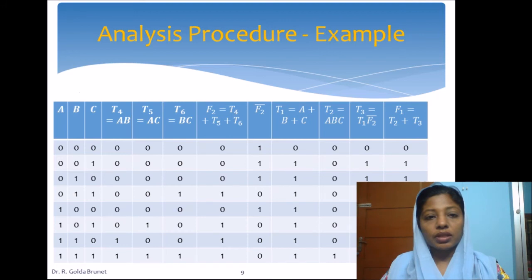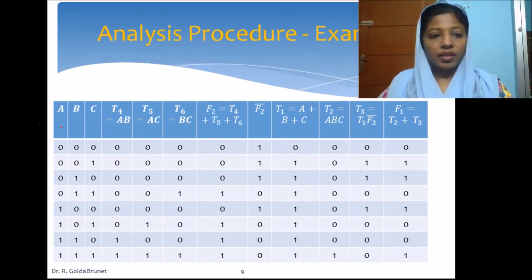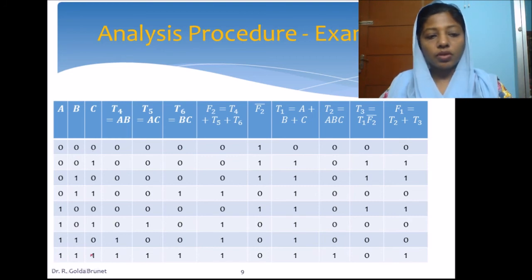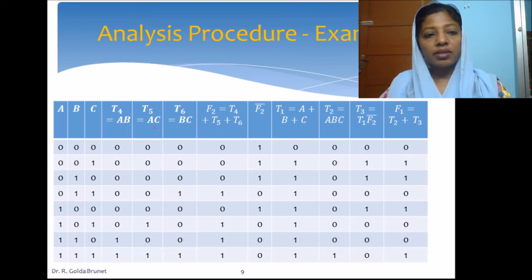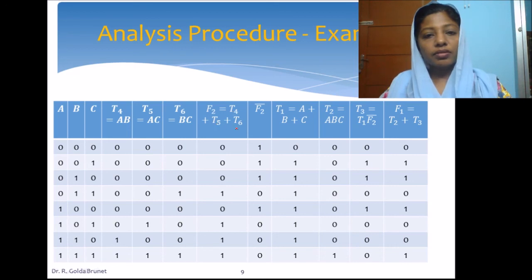The same results can be computed using a truth table. A, B, C are the inputs taking all combinations from 000 to 111. The directly computable variables are T4, T5, T6, T1, and T2. We compute T4 = A·B, T5 = A·C, and T6 = B·C using AND of the respective input columns. F2 = T4 + T5 + T6 is then computed using these three columns.